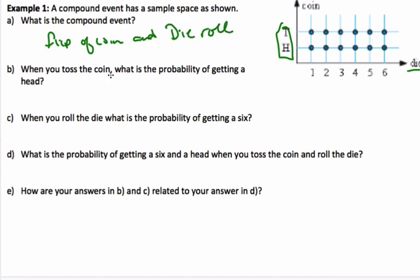When I toss the coin, the probability of getting a head is equal to 1/2 because it's either a head or a tail. The probability of rolling a 6 is 1 out of 6.